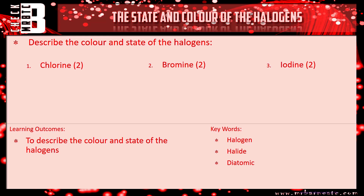Starting with chlorine: it's green and the state is a gas. Remember to include the state, not just the colour. For bromine, you will not get the mark for saying orange, so make sure you say brown and it's a liquid at room temperature.